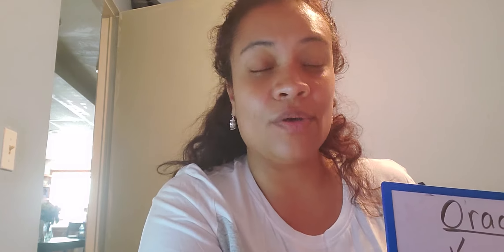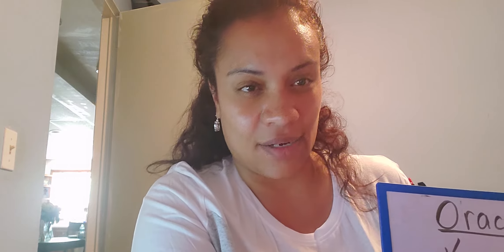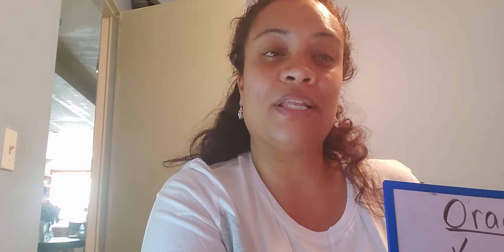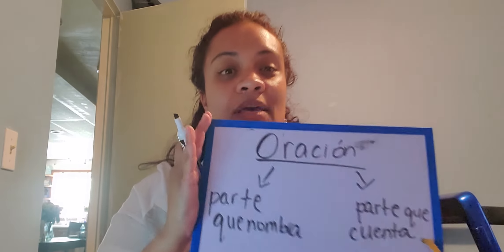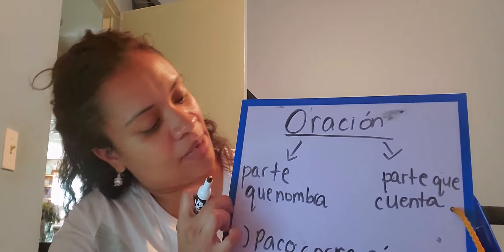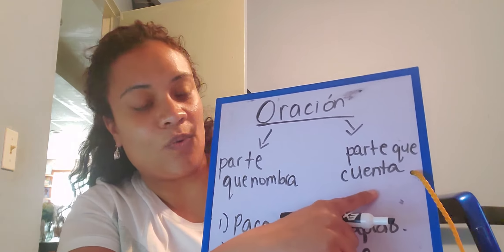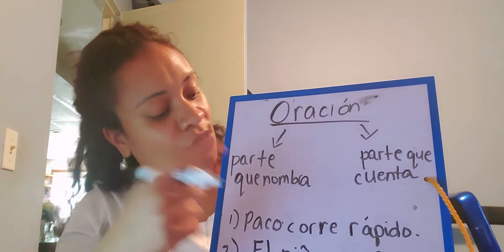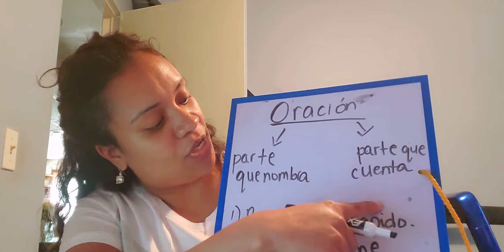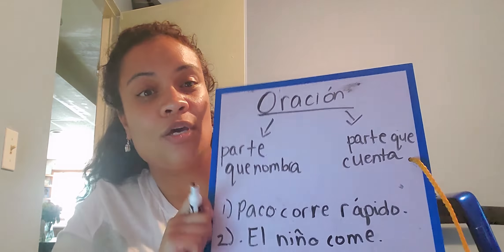La parte que nombra nos dice qué o quién está haciendo algo, y la parte que cuenta nos dice qué están haciendo. Pues aquí puedes mirar las dos partes. Tenemos la parte que nombra y también la parte que cuenta. So boys and girls, the two parts are here — the part that names and then the part that tells.